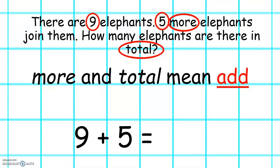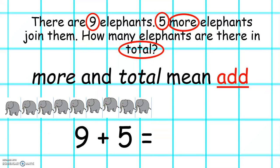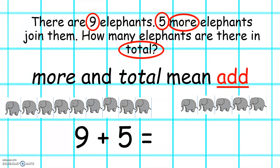Nine plus five. Again you can use your number line, you can use your fingers, you can use pictures to help you. Nine elephants plus five elephants. We know this is nine: ten, eleven, twelve, thirteen, fourteen. So there are fourteen elephants.